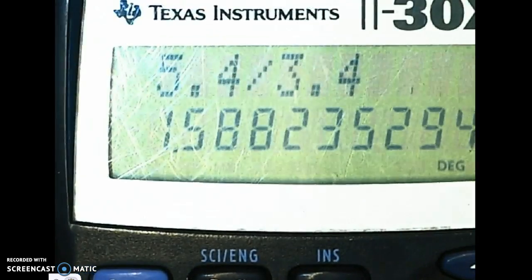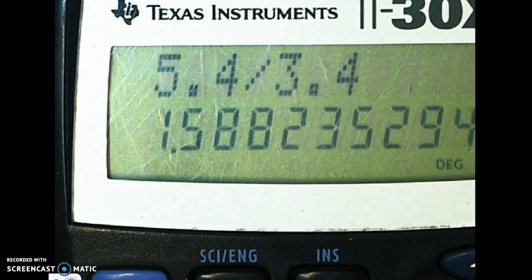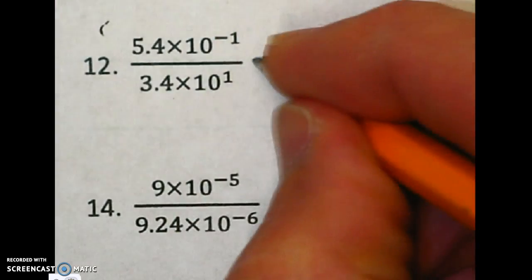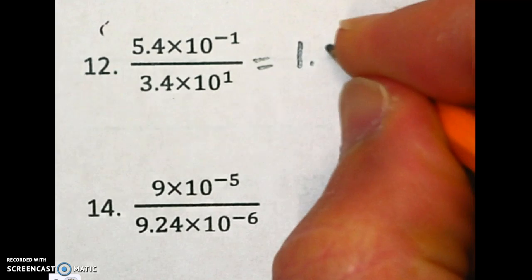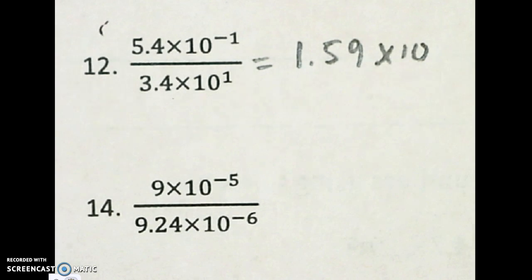Here we go. So, it's 1.588. So I'm going to do 1.59. I'm going to call that 1.59 times 10, and we'll figure out what our power is going to be.